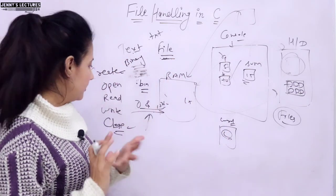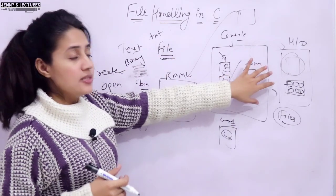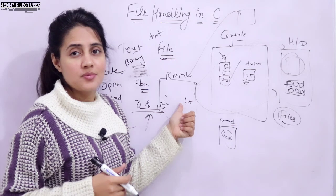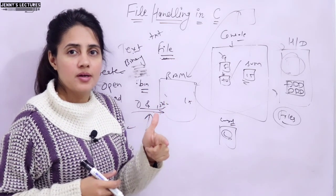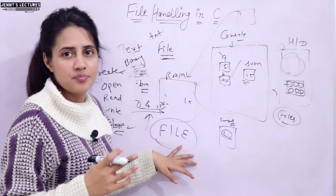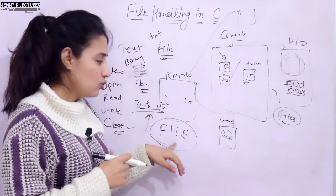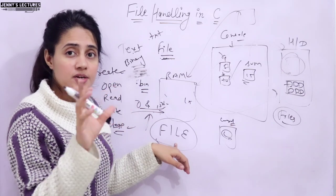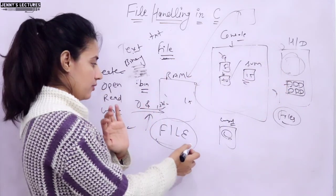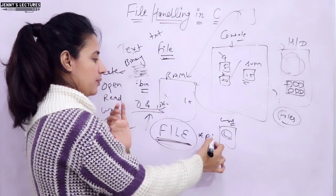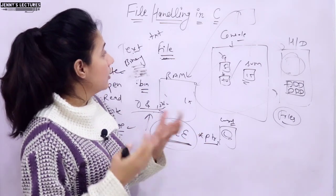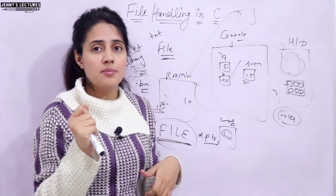This was just an introductory part on files in C. To handle files, you will need a pointer — that is a file pointer. The pointer type should be FILE (capital F-I-L-E), which is a data type whose prototype is already defined in the stdio.h header file. We will need one pointer of this type — declared as FILE *ptr — to handle files. We'll discuss this in the next video. Bye-bye, take care.